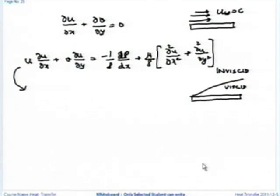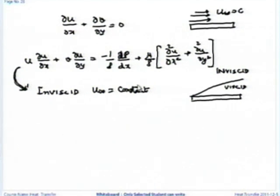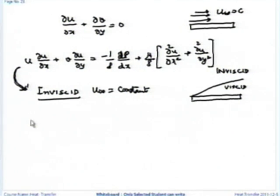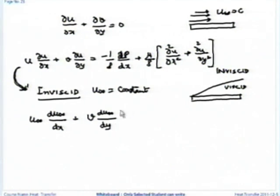In the inviscid portion, what is u-infinity? U-infinity is constant. For proof, if you put a tube and measure very much outside the boundary layer, u-infinity is constant. From potential flow solutions also one can show that u-infinity is constant, because inviscid flows can always be handled by potential flow. So u-infinity is constant means — applying the x-momentum equation to the inviscid portion: U-infinity dU-infinity by dx plus v dU-infinity by dy equals minus 1 by rho-infinity dp-infinity by dx.